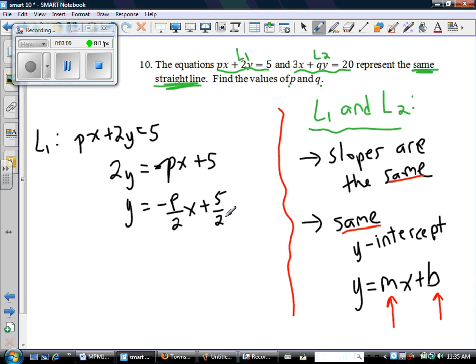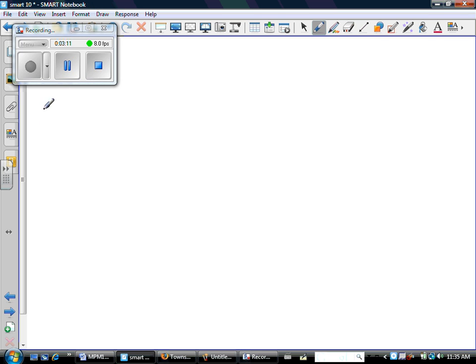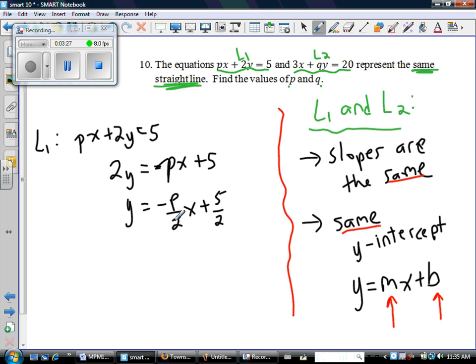I have a slope of negative p over 2 and a y-intercept of 5 over 2. So let's copy that information onto a new screen. So line one has a slope of negative p over 2 and a y-intercept of 5 over 2. So there it is. That's line one.